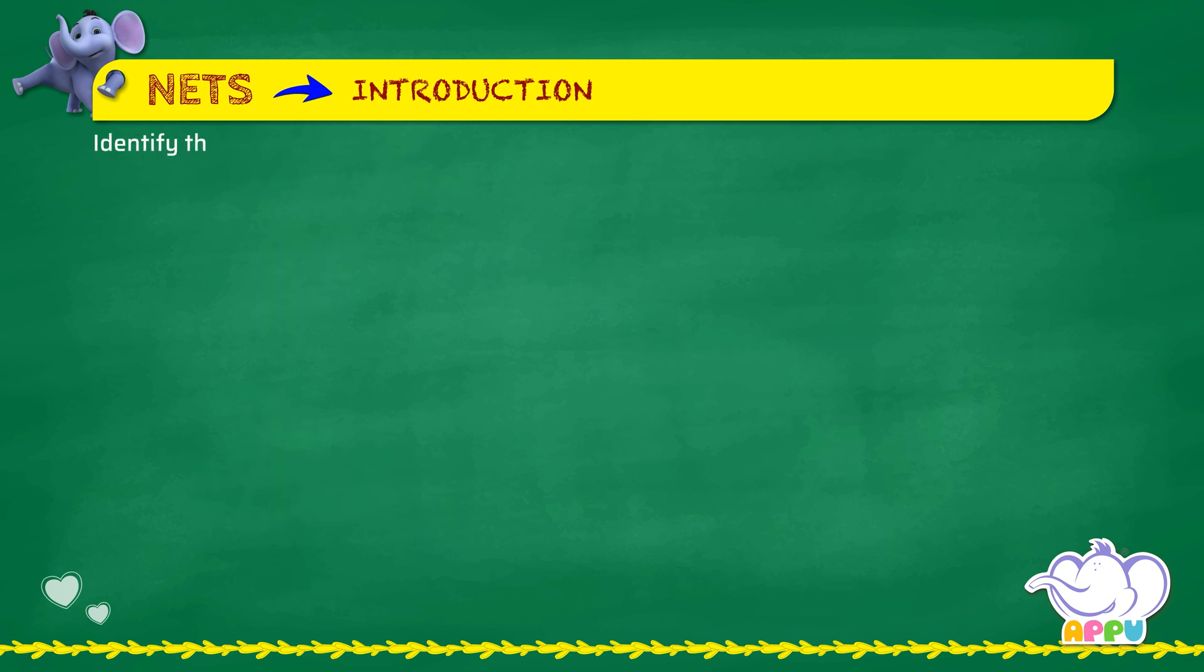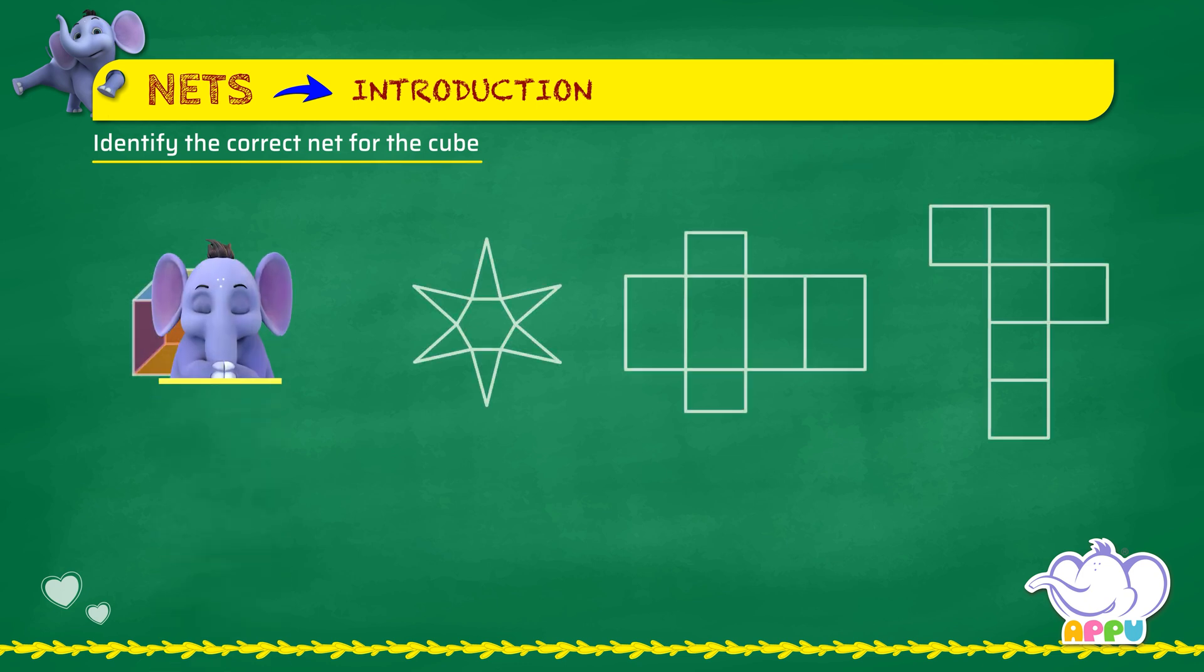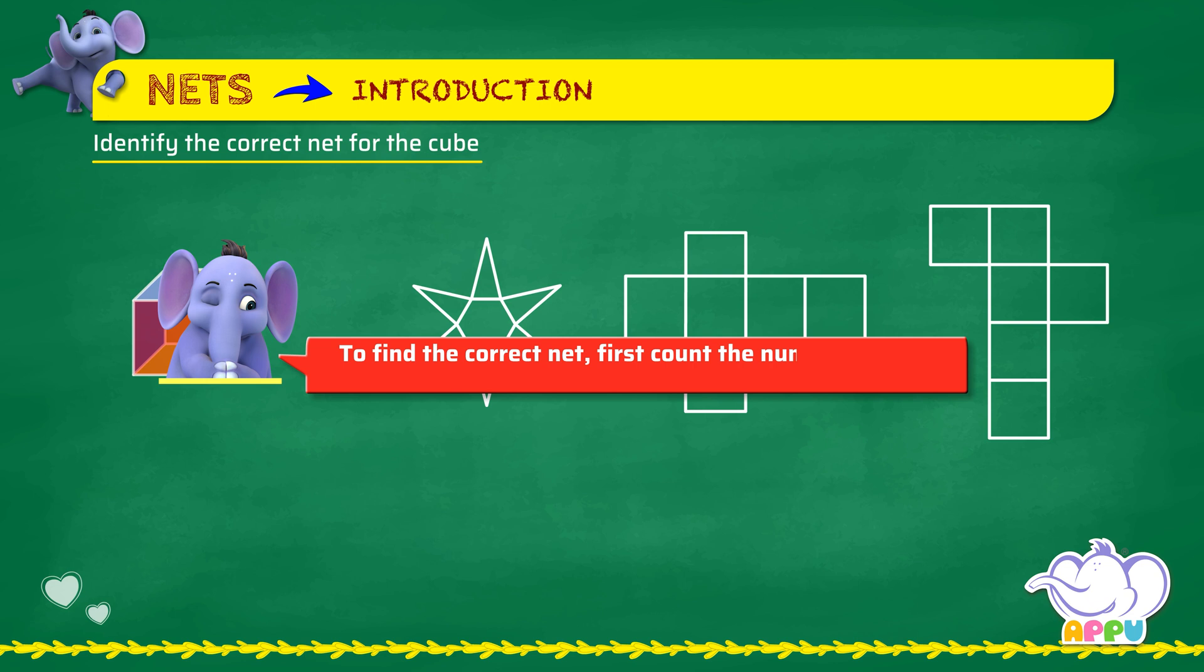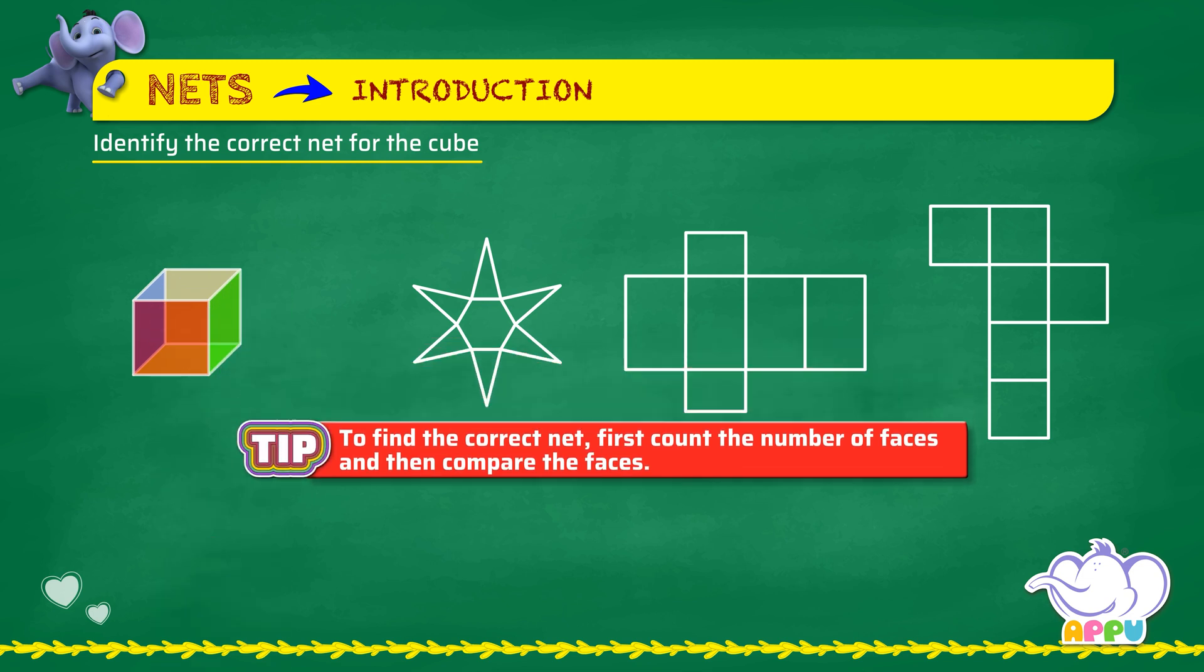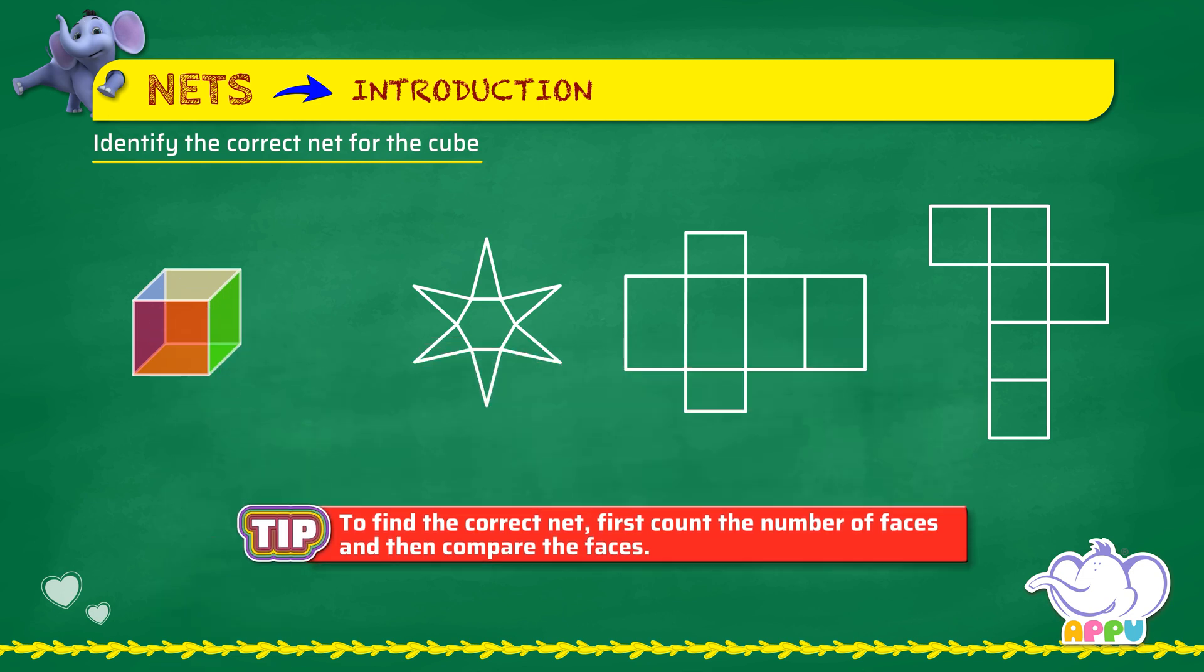Identify the correct net for the cube. To find the correct net, first count the number of faces and then compare the faces. A cube has six square faces.